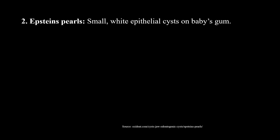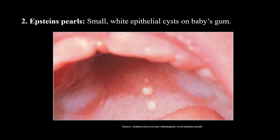Another one is Epstein's Pearls. Epstein's Pearls are small white epithelial cysts on baby's gum - on the gum or palate area. These are small white epithelial cysts which a nurse may notice. This is also normal - it goes away on its own within a few weeks. This is also a normal condition.